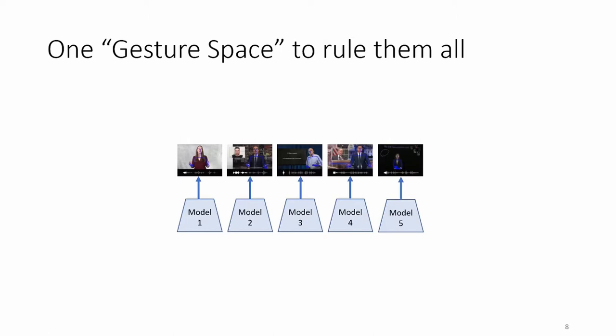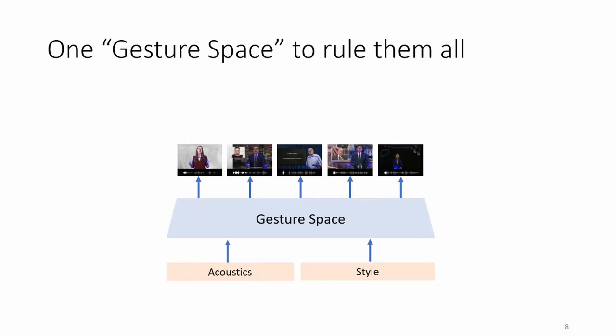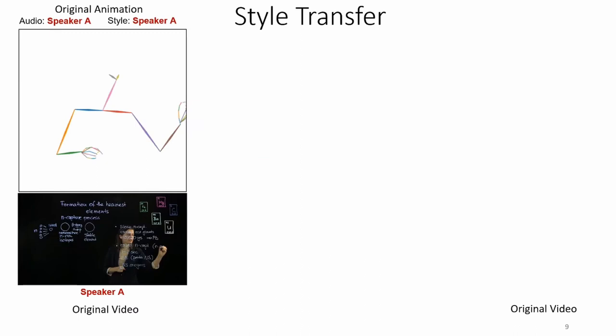While prior work learns a new model for every speaker, we hypothesize that learning one common gesture space for many speakers would be able to leverage the commonalities in the gesture style amongst those speakers. Additionally, this gesture space gives us the ability to change the style of the generated co-speech gestures, or simply called style transfer.